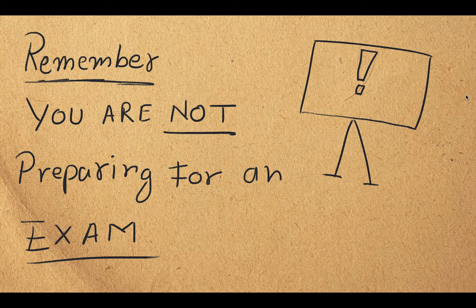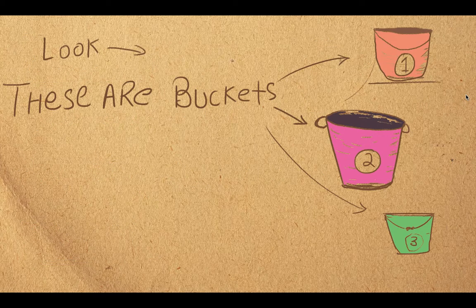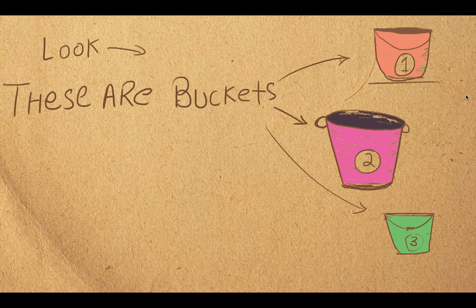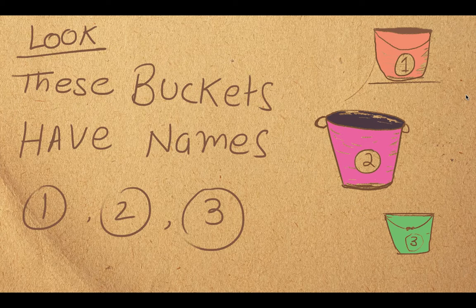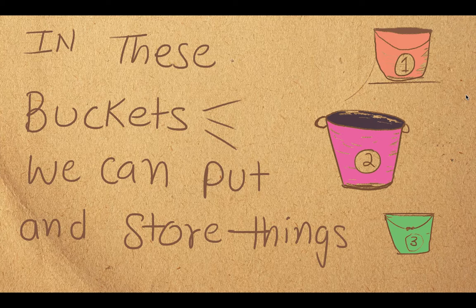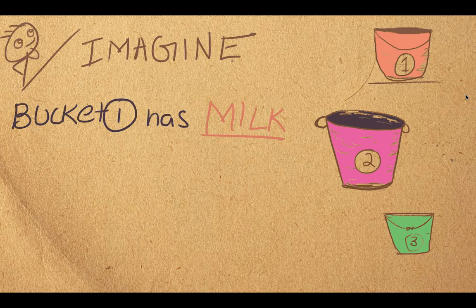Now imagine you are in your kitchen and there are three buckets. All three buckets have something inside them — some content, some data, some value is inside those buckets. We have given them names: bucket number one, bucket number two, bucket number three. These are the names written on them.